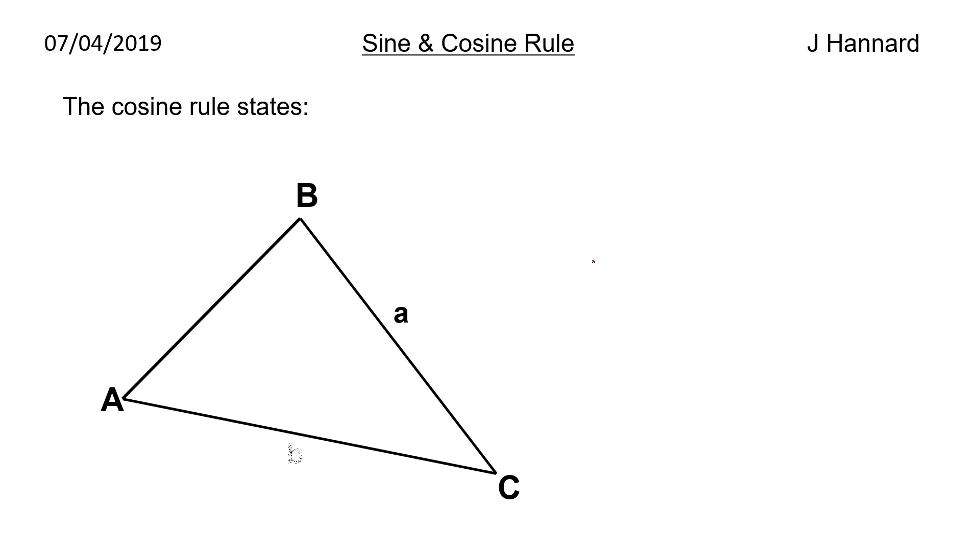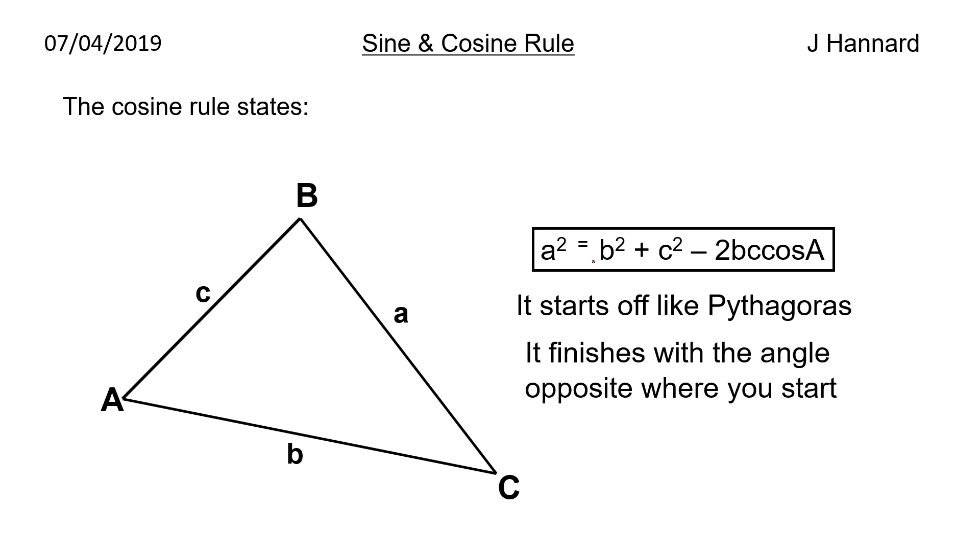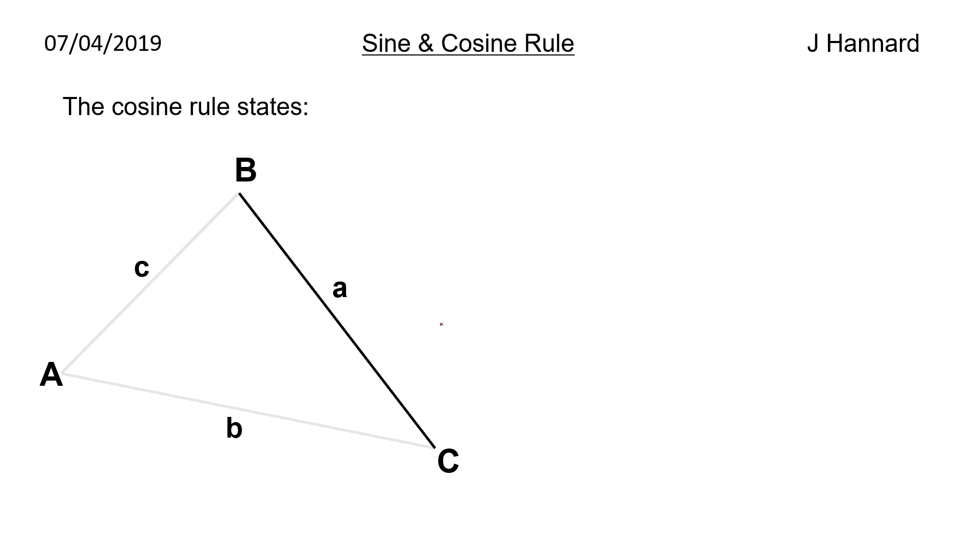So the cosine rule states similarly, we've got our triangle once again. So we've got a squared is equal to b squared plus c squared minus 2bc cos A. So it starts off like Pythagoras and then we get the angle involved. Finishes with the angle opposite where you start at. So we're starting at a squared, we do our little bit of Pythagoras and then we do minus 2bc cos angle that we started at, or opposite the angle that we started at.